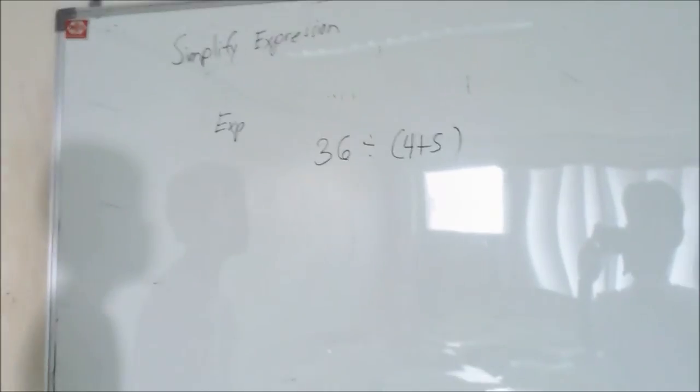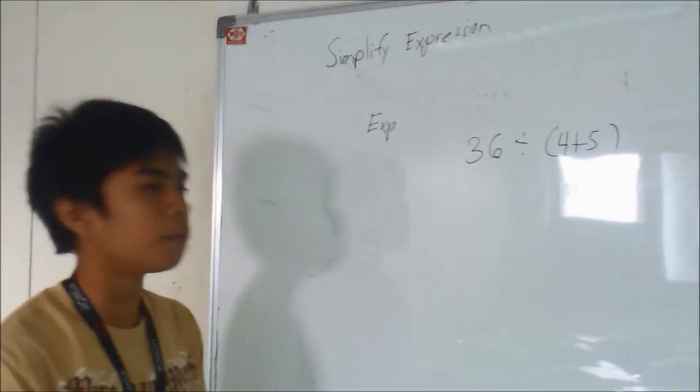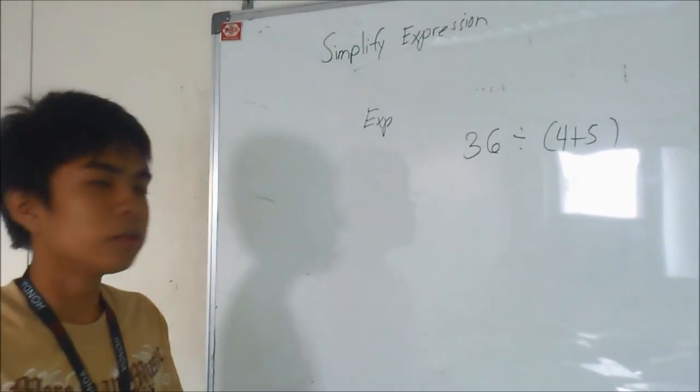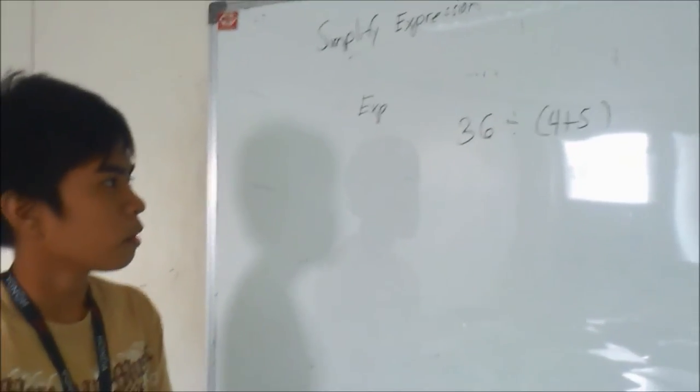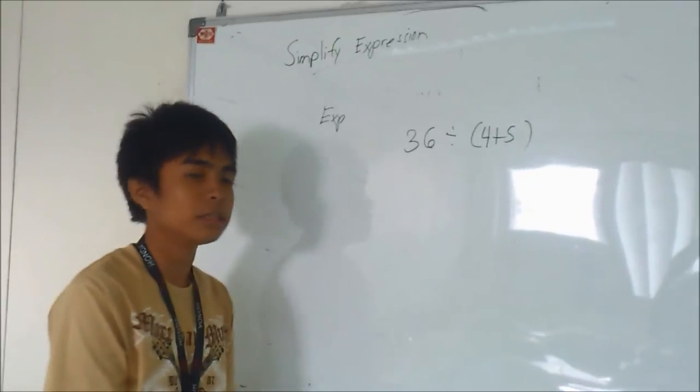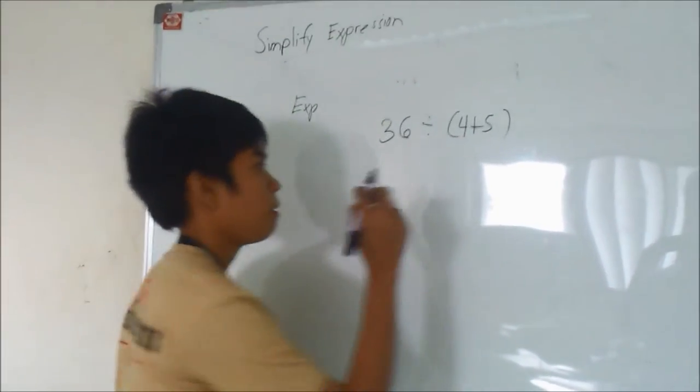Now, this is simplify 36 divided by the quantity of 4 plus 5. If you take what is counted first, I think the first is what is in the parentheses. The 4 and 5 is 4 plus 5, and 4 plus 5 is 9.